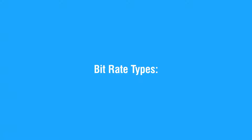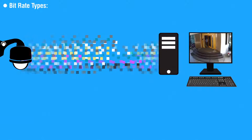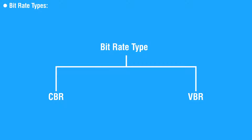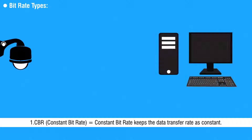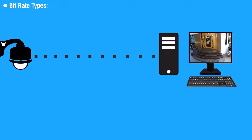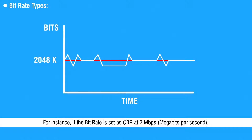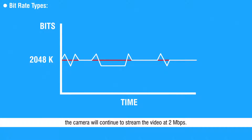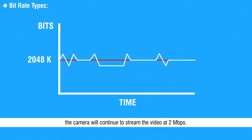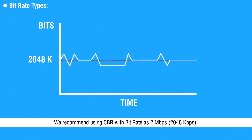Bit Rate is the rate at which data bits are transferred from the camera to the recorder. There are two types of bit rate. The first is CBR or Constant Bit Rate, which keeps the data transfer rate constant. For instance, if the bit rate is set as CBR at 2 Mbps, the camera will continue to stream the video at 2 Mbps. The advantage of using CBR is that the quality of video remains the same throughout. We recommend using CBR with Bit Rate as 2 Mbps, i.e. 2048 Kbps.